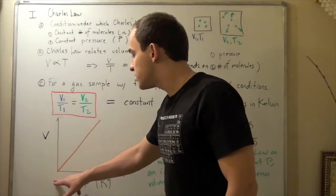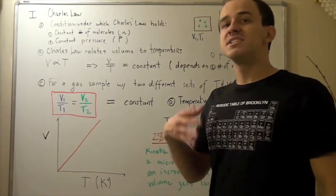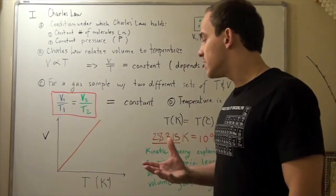We start at zero, zero. At zero volume, we have zero Kelvin. But remember, zero Kelvin is unattainable. Everything has volume, and that means our temperature must be somewhere above zero.